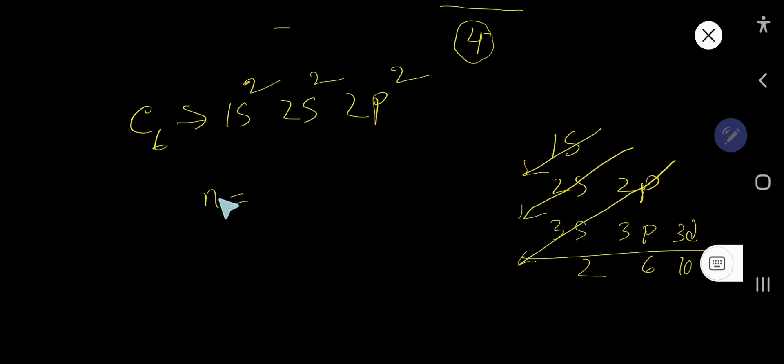To find valence electrons, look at the highest value of the principal quantum number. Here, the highest principal quantum number is n=2. For n=2, we have 2s and 2p. Add the electrons in 2s and 2p: 2 plus 2 equals 4. So carbon has 4 valence electrons.